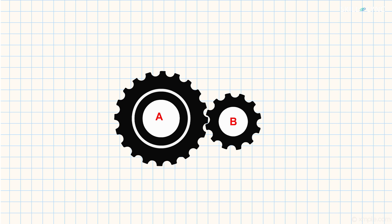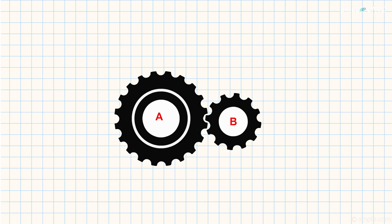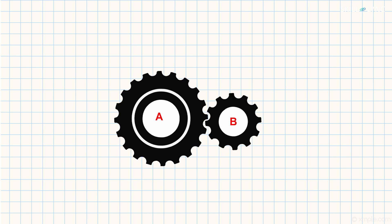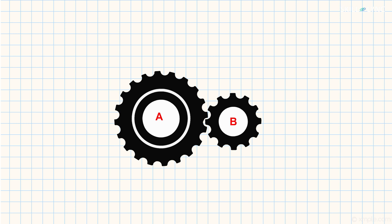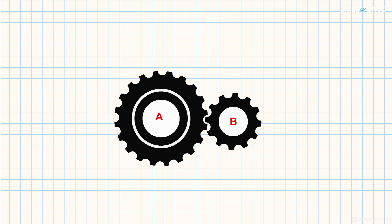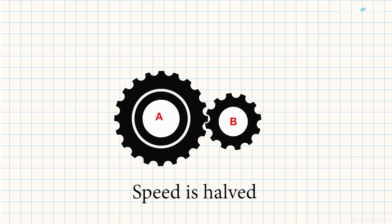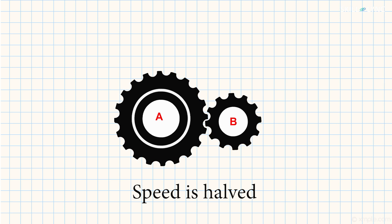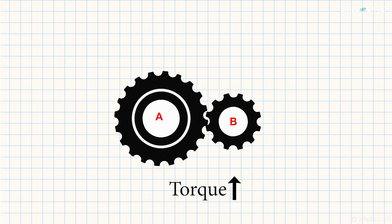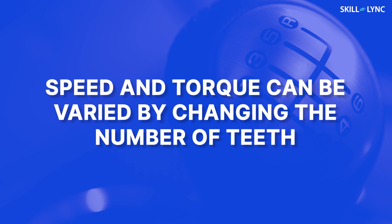Let us take gears which are meshed with each other. Let the number of teeth on the second gear be twice that of the first one. Now, when the first gear is rotated, the second one rotates as well. Here, we can notice that the smaller gear has to make two complete rotations to make the bigger gear rotate once. That is, the input speed is reduced to half of its value. As the speed reduces, torque increases. Similarly, when the number of teeth in the gears are changed, the speed and torque transmitted changes as well.